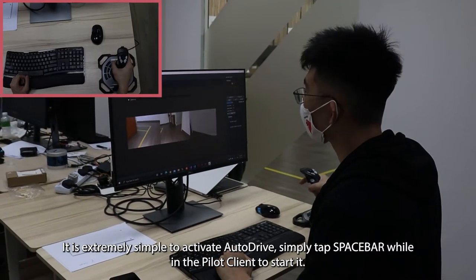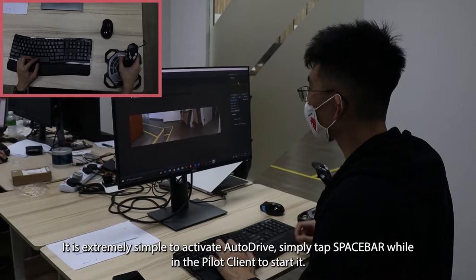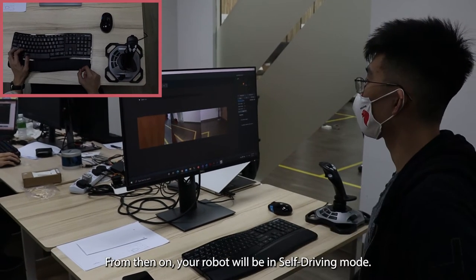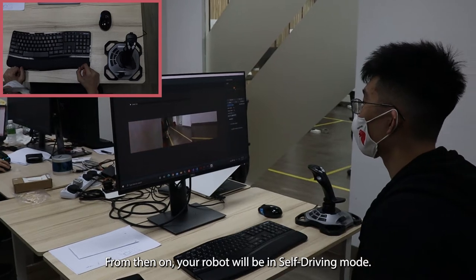It is extremely simple to activate Autodrive. Simply tap the spacebar key while in the Pilot Client to start it. From then on, your robot will be in self-driving mode.